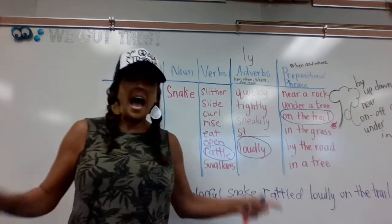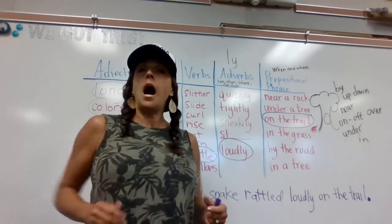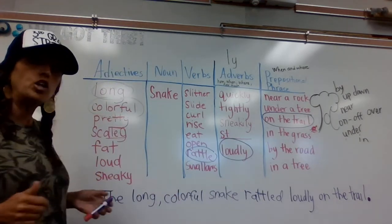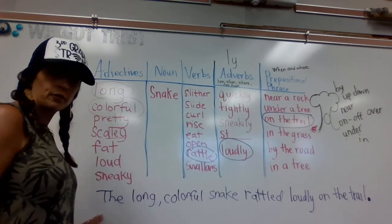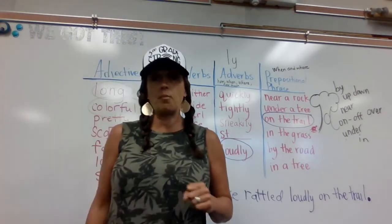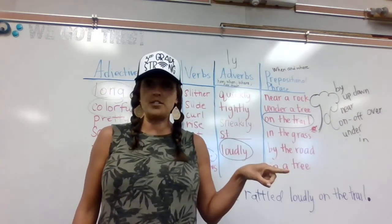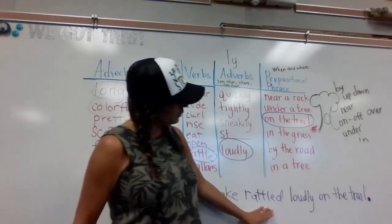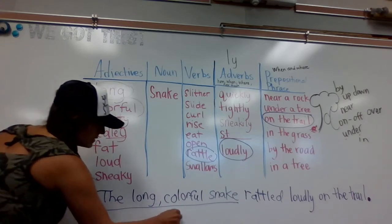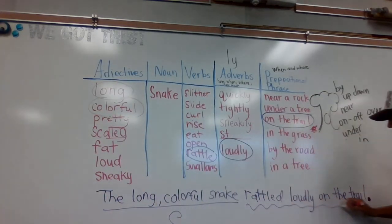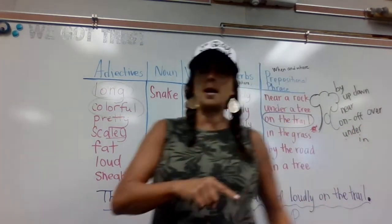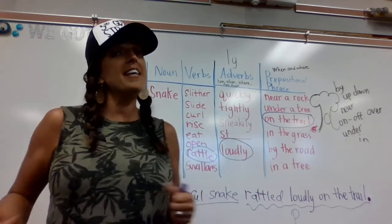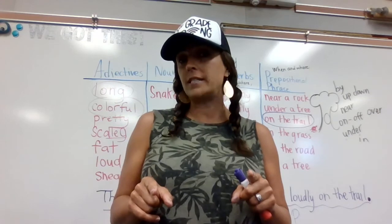How do I know it's the perfect sentence? Does it have a subject? Subject is who — the long, colorful snake. Yes, it has a subject. Does it have a predicate? Predicate is what they do — the snake rattled loudly on the trail. Here is my subject and here is my predicate. Because my sentence has a subject and a predicate, it's a complete sentence. And because I used all the parts of speech, this is the perfect sentence! Can you make up your own perfect sentence? I can't wait to hear them!